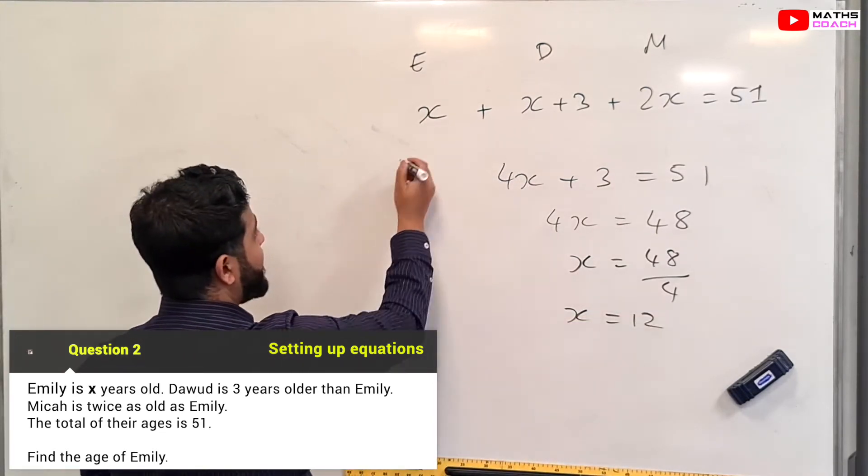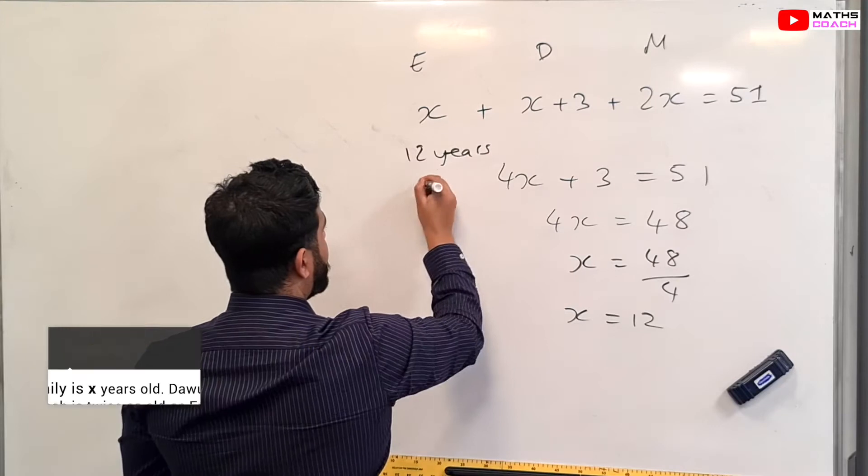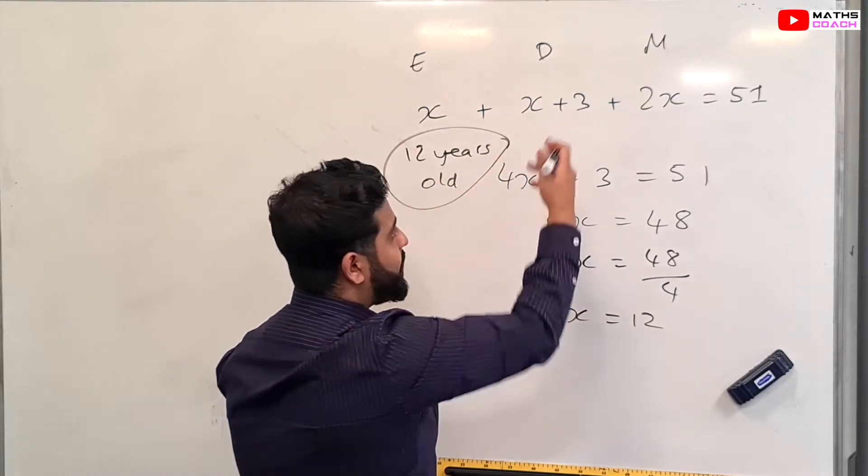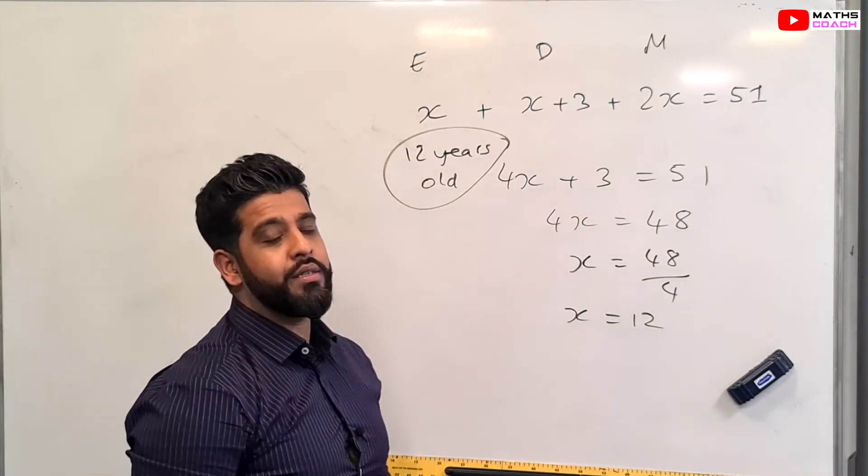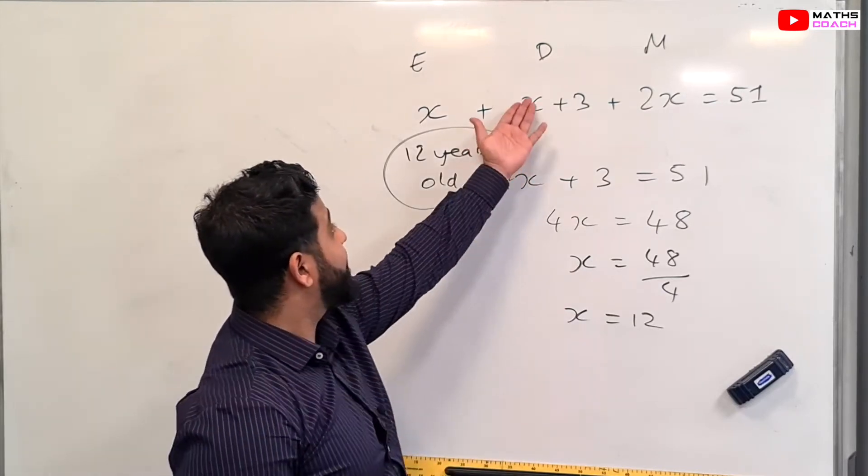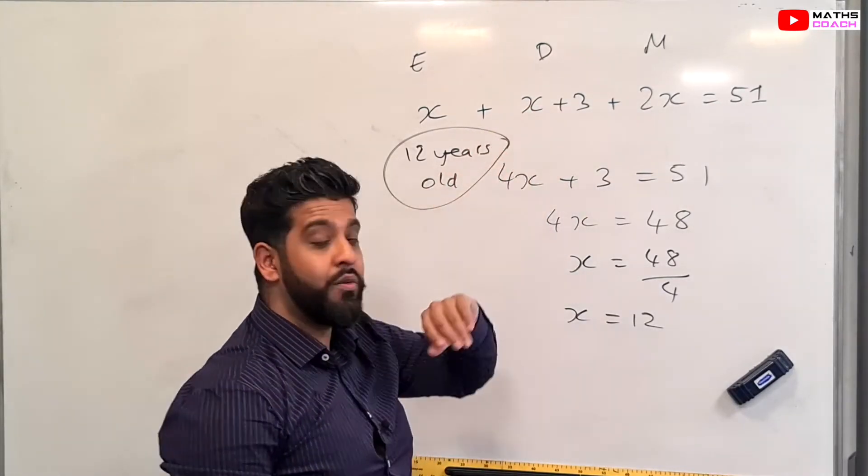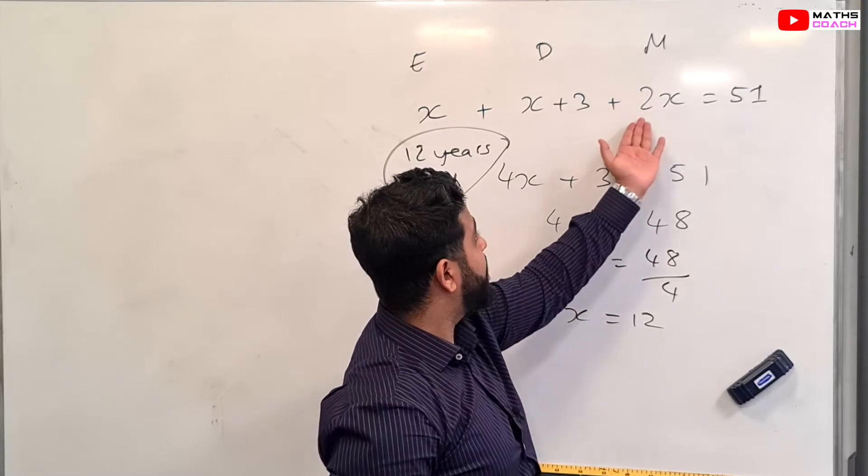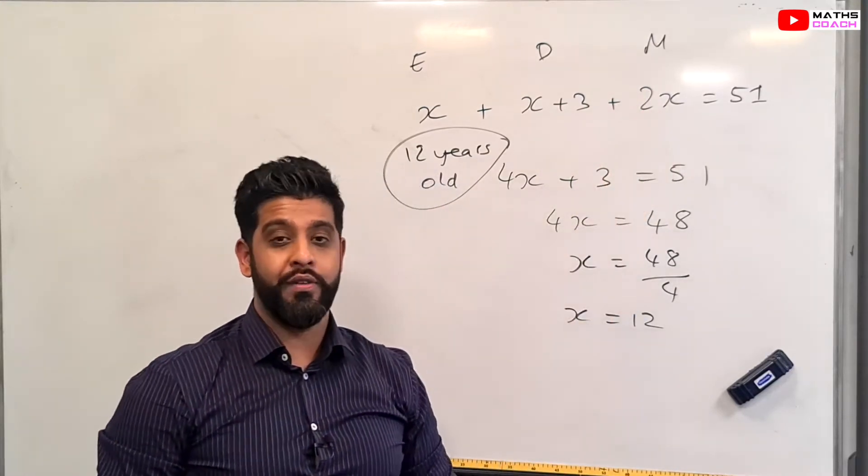So therefore, Emily is 12 years old. And of course, we've got the other ages as well. The question doesn't ask us to find them, but just in case, Dawood would be 12 plus 3, which is 15, and Micah would be 2 times 12, which is 24 years old.